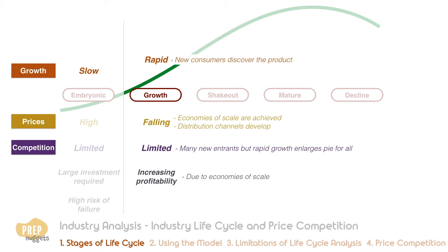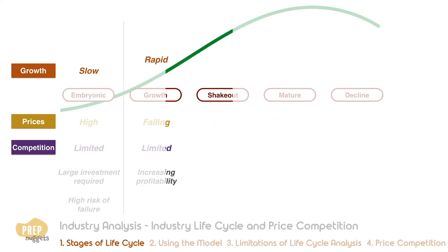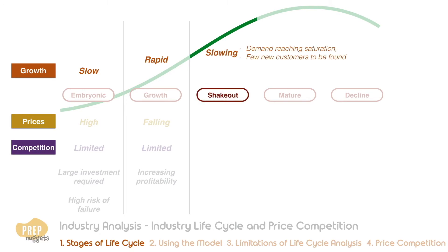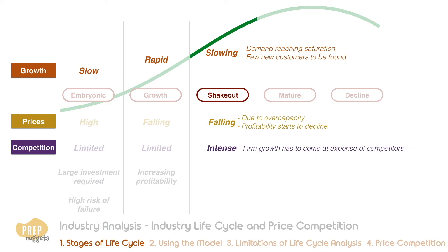Industry profitability improves as volumes rise and economies of scale are attained. This honeymoon stage will not continue indefinitely, as growth in demand will begin to slow — this is known as the shakeout stage. Demand starts to reach saturation and companies have to compete for the few new customers left. Excess capacity begins to develop, leading to price cuts and declining profitability. Competition is intense as firms have to grow at the expense of other firms.